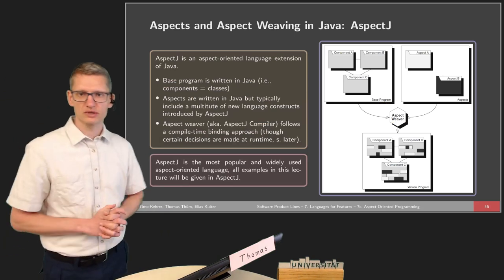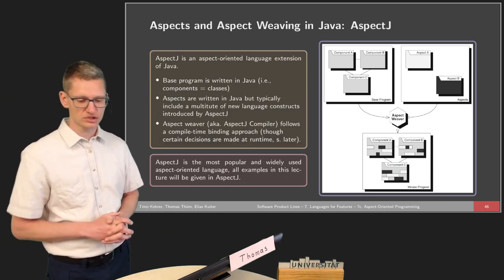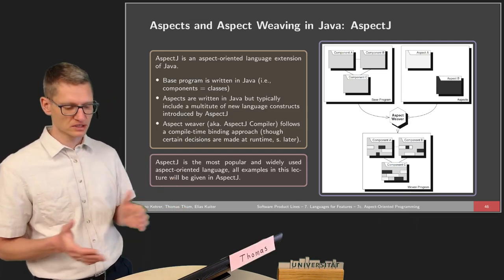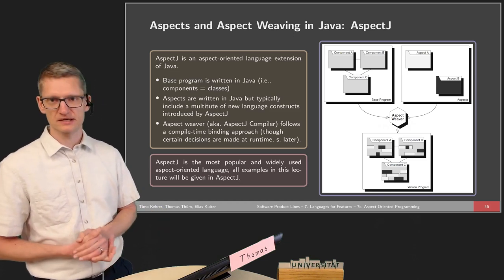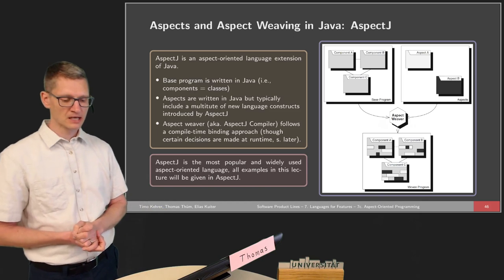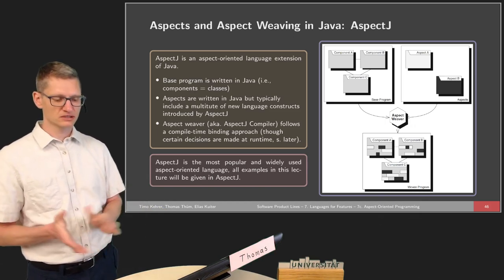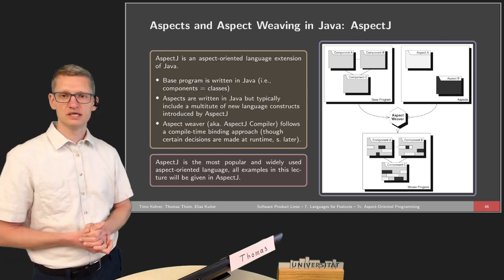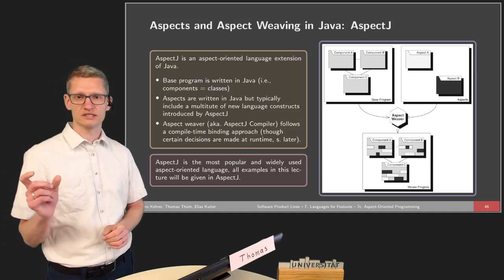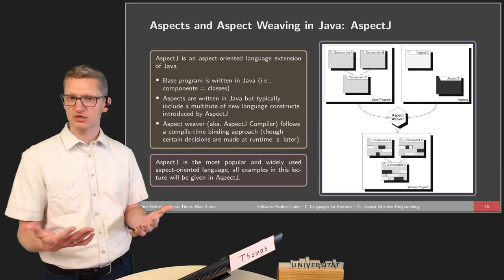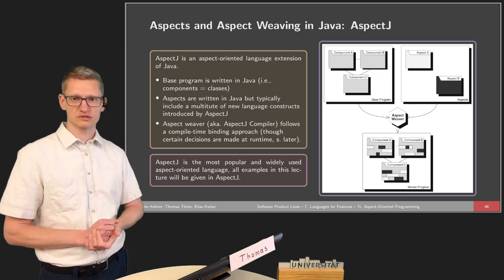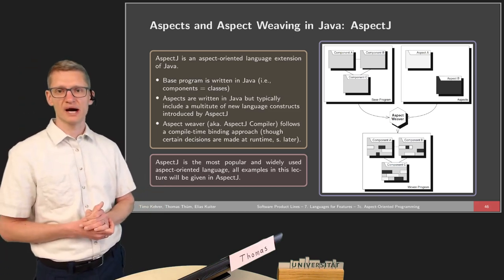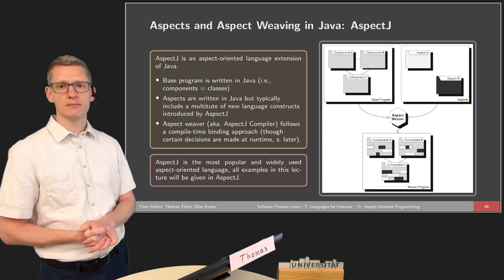In this lecture we will talk about AspectJ. AspectJ is an aspect-oriented language extension of Java. The base program is written in Java — components are basically classes and packages in Java. The aspects are written in Java but typically include a multitude of new language constructs. For instance, instead of the keyword class, we write aspect, indicating this is a special kind of class with new language constructs. The aspect weaver in terms of AspectJ is the AspectJ compiler, and it follows a compile-time binding approach.